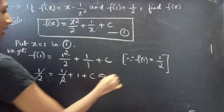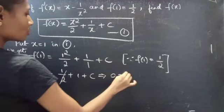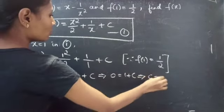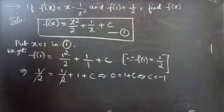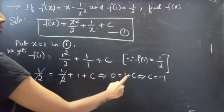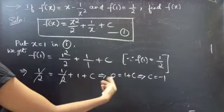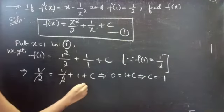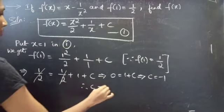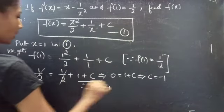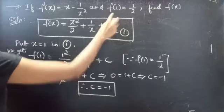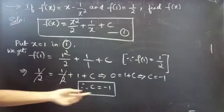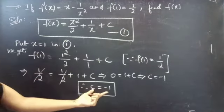From this we get 0 equals 1 plus c. Taking c to the left-hand side, we get c equals minus 1. Therefore, using f(1) equals 1 by 2, we find the value of the constant c equals minus 1.